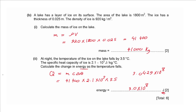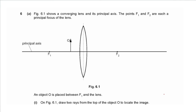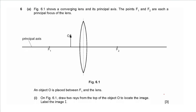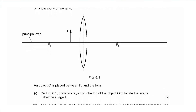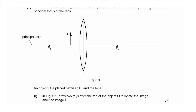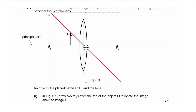Question 6a: figure 6.1 shows a converging lens with principal foci F1 and F2. An object O is placed between F1 and the lens. Draw two rays from the top of O to locate the image and label it I. The first ray connects the top of the object through the optical centre of the lens and is extended. Since the object is between the focus and the lens, the image is virtual — the ray must be extended backwards.